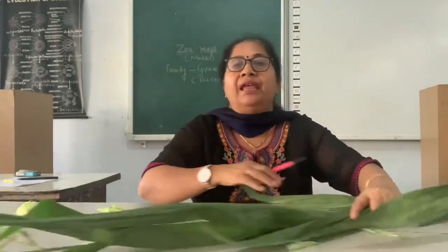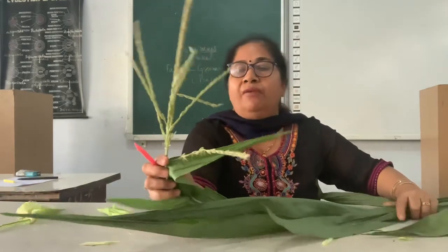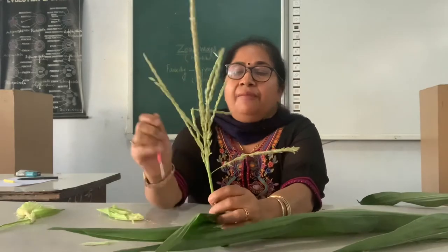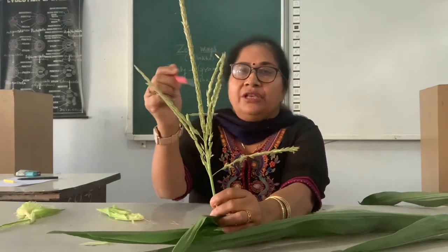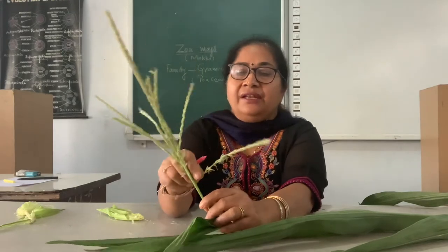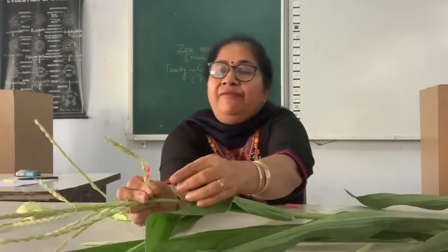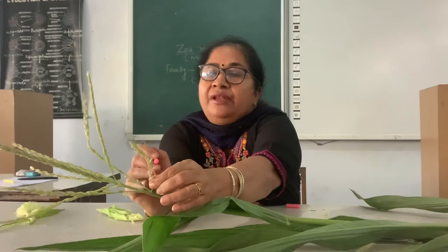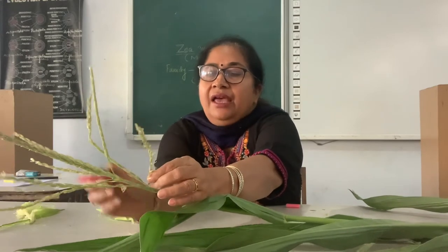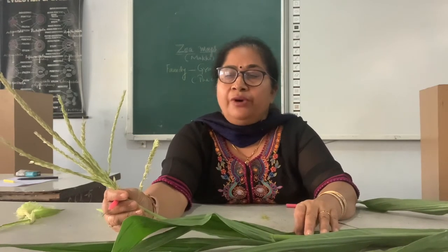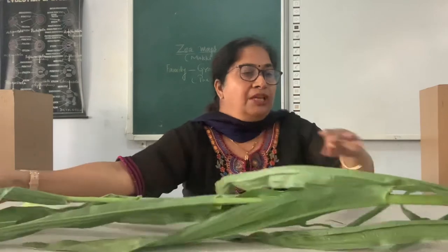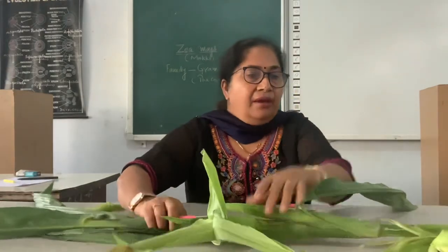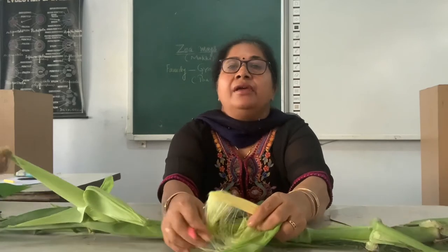Now this is the male flower, which is borne at the tip of the plant. Male flowers are present in the form of a spike, and this whole inflorescence is called the tassel. These are spikelets which have stamens. The stamens produce pollen grains, which are pollinated with the help of wind — also called anemophily. The pollen grain fertilizes the female flower, and fertilization leads to the formation of the cob or spadix having mature grains called caryopsis.